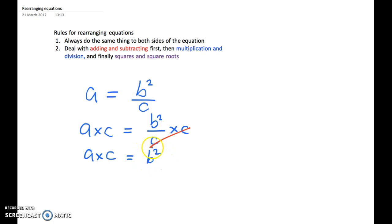Now the second thing we have to do is get rid of this square. To get rid of this square we can take the square root, and we have to do that to both sides. So we end up with square root of a times C (put that in brackets just to show that it's all square rooted) equals b squared all square rooted. And finally you can see that we end up with b equals square root of a times C.